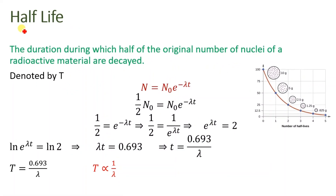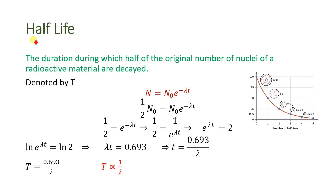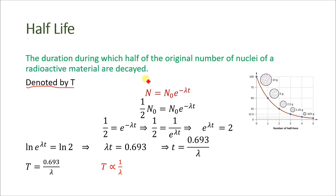Hello, today we are going to learn about half-life. We will derive the equation for half-life. Half-life is denoted by T, and the definition is the duration during which half of the original number of nuclei of a radioactive material have decayed. Using the radioactive decay law, we will derive the mathematical expression for half-life.